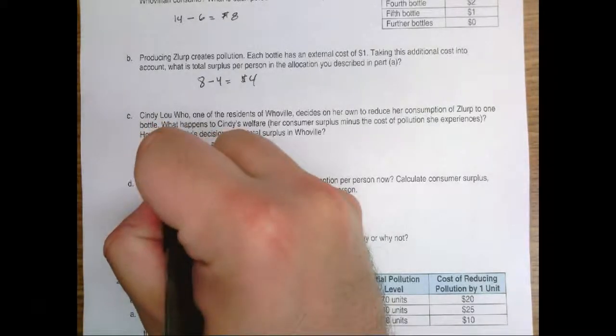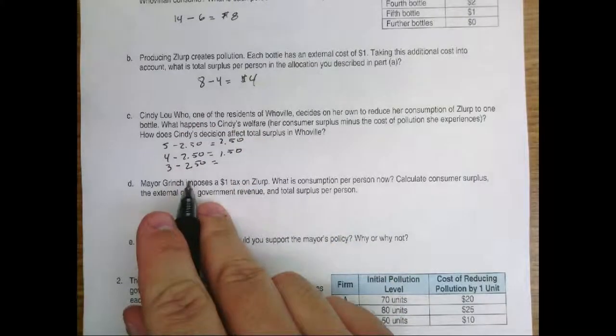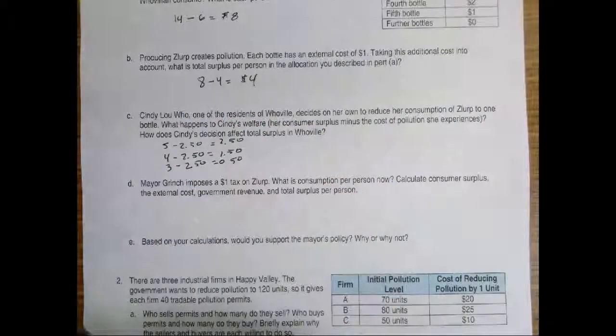To buy the third bottle, we subtract the $3 that we are willing to pay minus the $2.50 in actual cost. We find that in that case there's $0.50 in surplus for the third bottle.